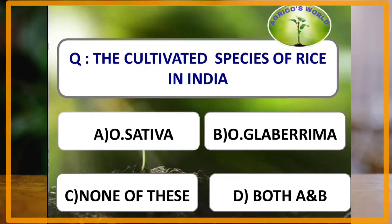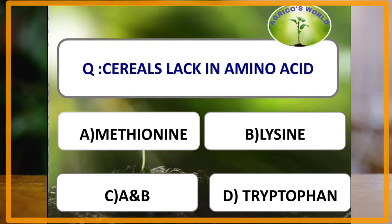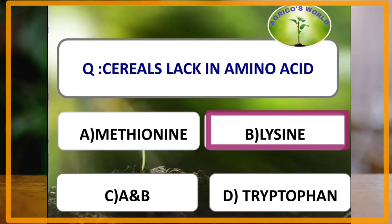The cultivated species of rice in India: both Oryza sativa and Oryza glaberrima are cultivated species of rice, but the cultivated species of India is Oryza sativa. Oryza sativa is the Asian rice and Oryza glaberrima is the African rice. Cereals lack the amino acid lysine, and pulses lack the amino acid methionine.